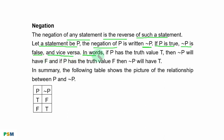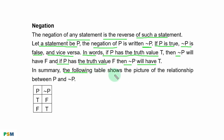In words, if P has the truth value T, then negation P will have F. And if P has the truth value F, then negation P will have T. In summary, the following table shows the picture of the relationship between P and negation P.